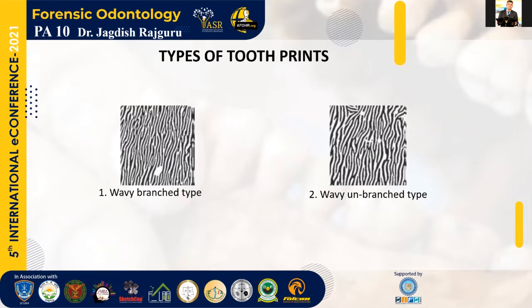Coming to the embryological component of enamel, enamel is derived from an ectodermal component and it is avascular in nature, which has a principal element called the enamel rod. Enamel rods travel from the dentino-enamel junction (DEJ) to the surface area, and the diameter of these enamel rods is 4 to 5 micrometers in diameter and around 9 to 11 micrometers in length. They have a 1 to 2 ratio dimension from the DEJ to the surface area, and enamel rods or prisms vary in orientation according to their position and location.